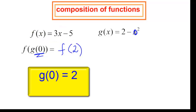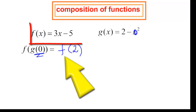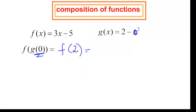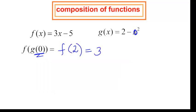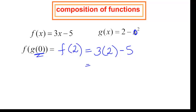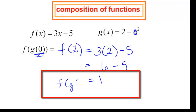We are not done. I have this f function, and I don't want f at x — I want f at 2. Looking at the f function, I take 3 times, and instead of x I write 2, minus 5. Well, 3 times 2 is 6, minus 5, which is equal to 1. So f at g at 0 is equal to 1.